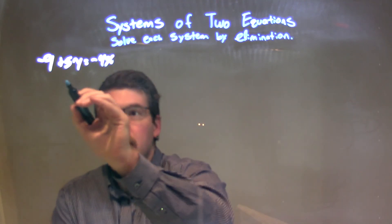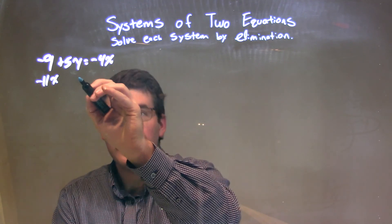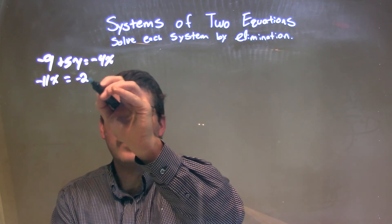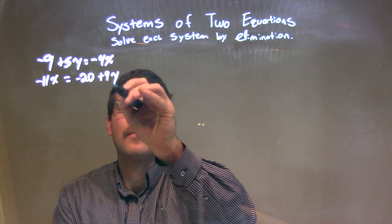and the second one is negative 11x equals negative 20 plus 9y.